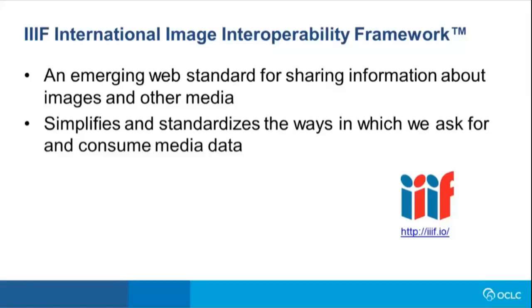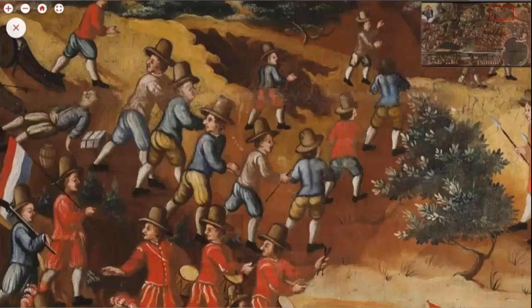A key feature popular among IIIF implementers is deep zoom. In this image you can see a large canvas — a very large painting — and what covers the rest of the slide is a very narrow zoomed-in portion of that canvas. Deep zoom is built into IIIF as a foundational component of the APIs, allowing for dynamic, quick, and very high fidelity zooming into images. This is really helpful when working with very large images or manuscripts that have small illuminations.